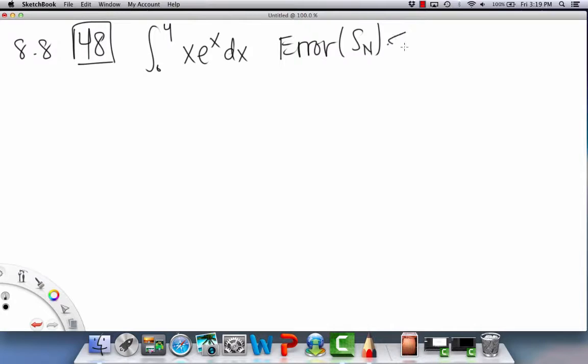So error of the Simpson's one is less than or equal to 10 to the negative 9, so that's an even smaller number than last time. So we want this error to be less than or equal to, okay, so this 10 to the negative 9 is equal to K4 times (b-a)^5 over 180n^4. That's just the formula for the error for Simpson's.